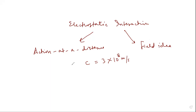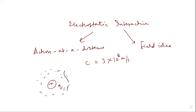Now, surrounding any charge, how do we define the electric field? We know if we have some charge, for example a point charge q1, a positive charge, there will be an electric field surrounding this charge, whether it is a positive charge or a negative charge. The question is how we define that.